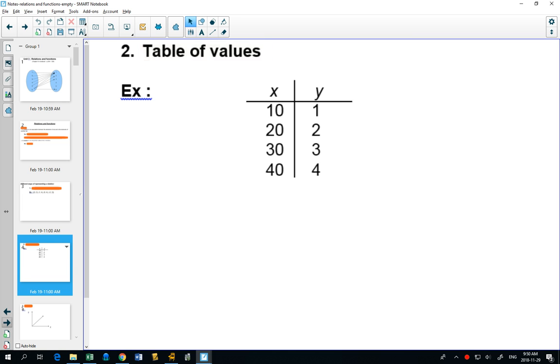Another way you could represent a relation is with a table of values. And often we switch between one form and the other. Could you see how you could take this table of values and make them ordered pairs? Like instead of the 10 and the 1 in the table, you could have the point 10,1, 20,2, 30,3, and 40,4. Any guesses what the next one would be? 50 and 5.